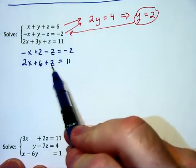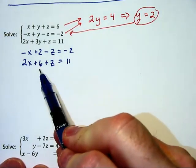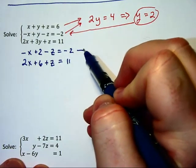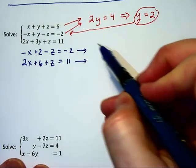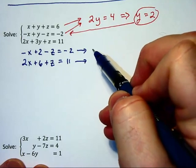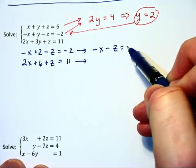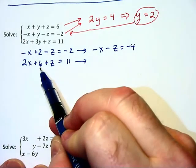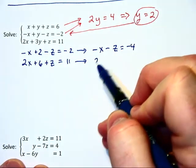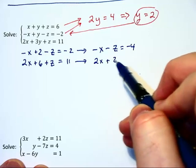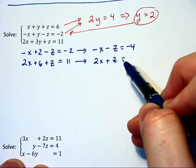Now, I'd like the x's and z's on the left with the constants on the right. So let's clean up each equation. For the first one, we will subtract 2 on each side to have negative x minus z is equal to negative 4. And then, subtracting 6 on each side, we will have 2x plus z is equal to 5.